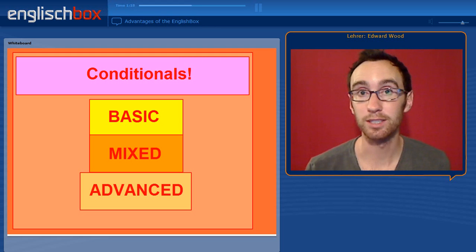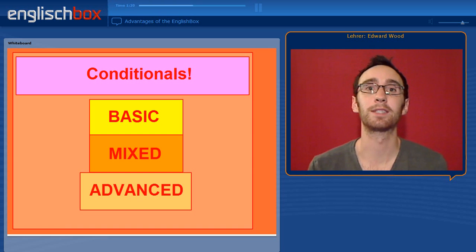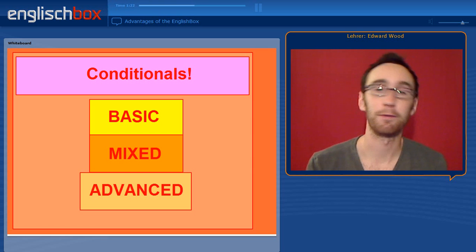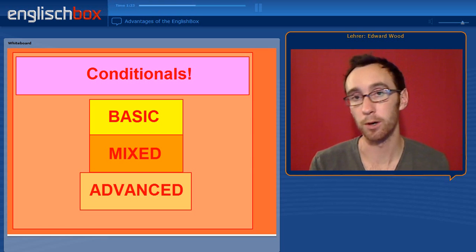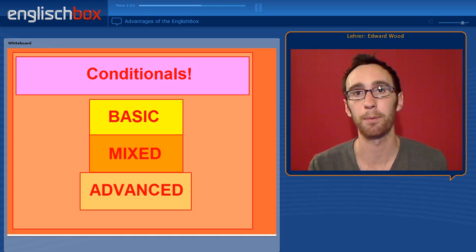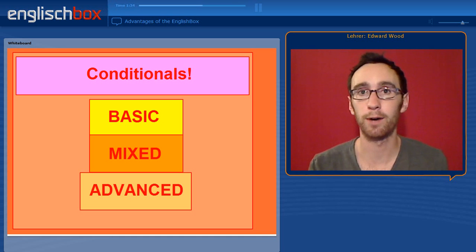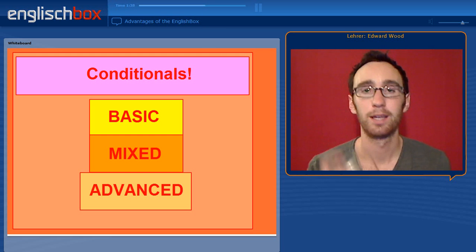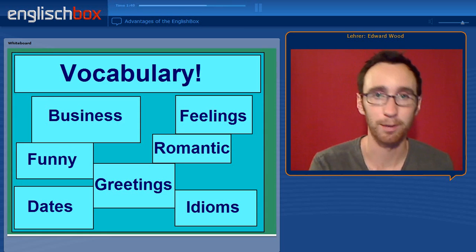We also have conditionals. Lots of people make mistakes with conditionals. We have the basic conditionals, from the zero conditional to the first, second, and third conditional. Then we have mixed conditionals, when the first, second, and third conditionals are all jumbled up. We also have advanced conditionals, just to make it even more difficult. Click on one of those if you want to learn about that.